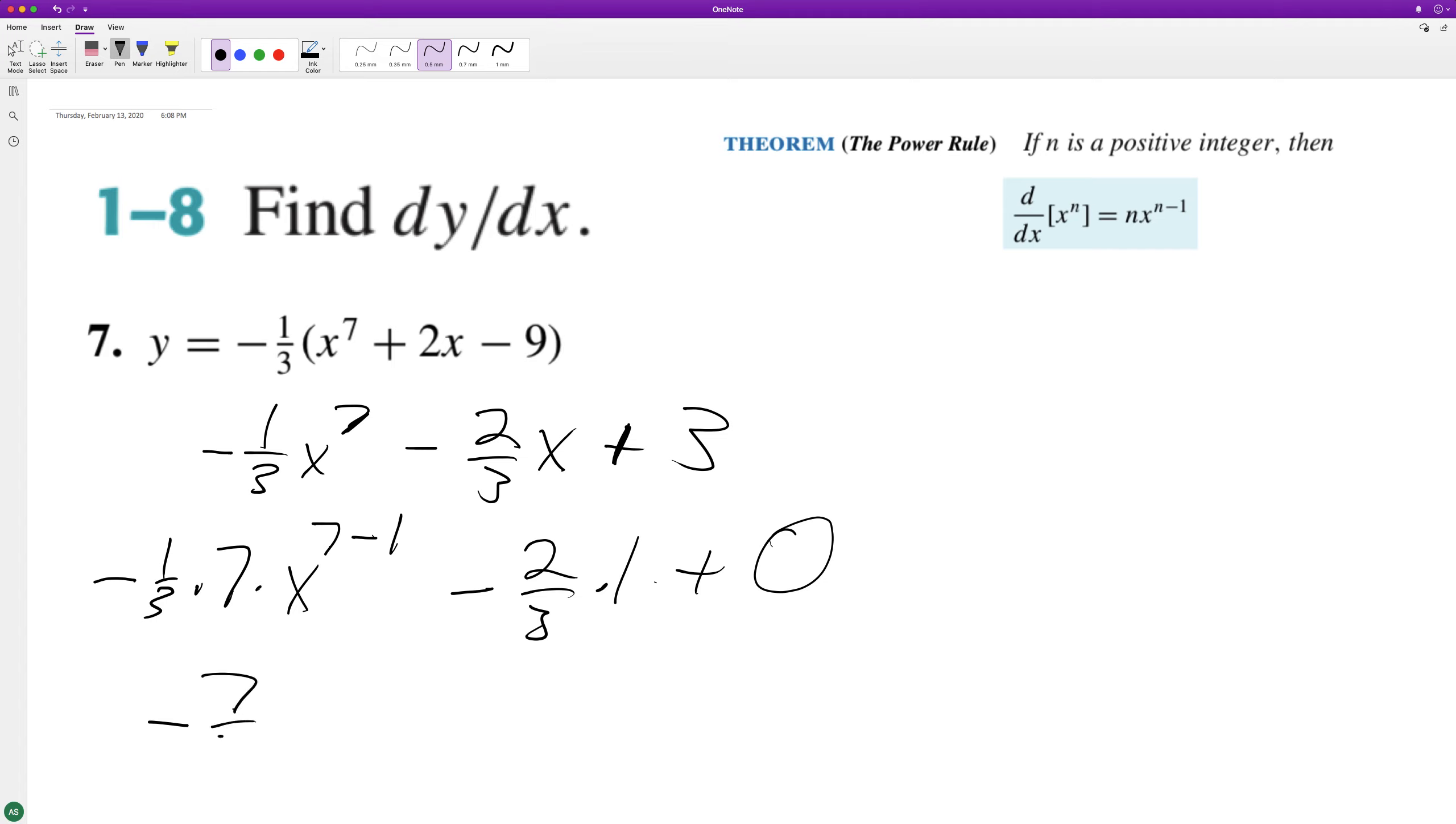So we end up with negative seven-thirds x raised to the sixth minus two-thirds, and that's it.